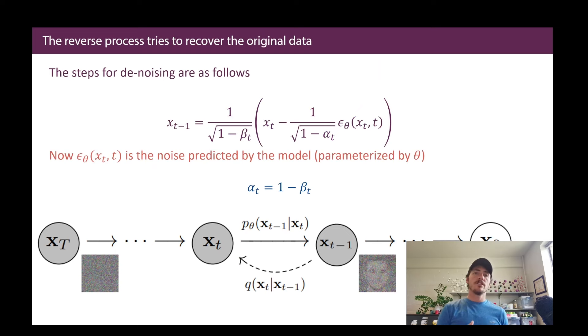Okay, so then the reverse process is simply trying to recover that original data and the steps mathematically look as follows. Now, in order to get an image at xt minus 1, that's going to be equal to 1 over 1 minus the square root of 1 minus your variance schedule, beta t. This all multiplied by whatever your previous step was, xt. Then we're going to minus from that 1 over the square root of 1 minus alpha t, which is just 1 minus the variance schedule, multiplied by epsilon theta of x and t and t. So what is that? That is your neural network. That is your U-Net. That is a model which is parameterized by theta, all the different parameters that go into that denoising U-Net. That allows us to get to each iterative previous step until we come back to our original image.